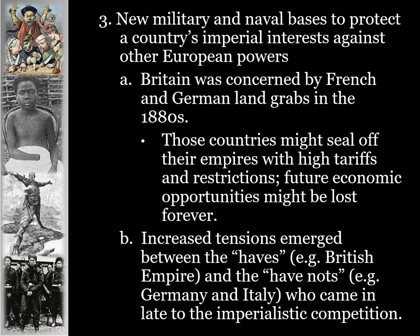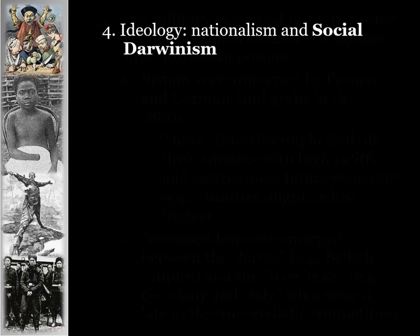Imperialism will be one of the major causes leading to the Great War. Tensions emerged between the 'have' nations, like the British Empire, and the 'have-not' nations, like Germany and Italy, who came late to the imperialistic competition. Germany and Italy were late to the land grab because they had not formed as nations until the 1860s and 1870s. This meant they acted very aggressively to catch up, grabbing prime pieces of real estate with resources in Africa and Asia. An aggressive Germany in particular would be a factor leading up to World War I.